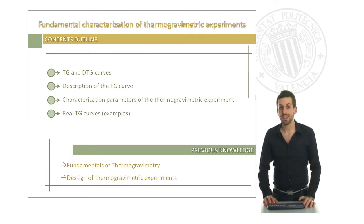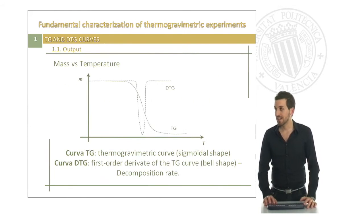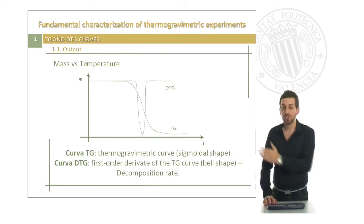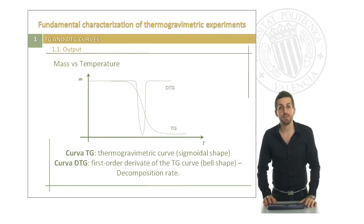Let's start then with the TG and DTG curves. This is the output of our thermogravimetric analysis in which we obtain a plot that represents the mass versus the temperature. The sigmoidal shaped curve that we can see is the TG thermogravimetric curve and the other one which has a bell shape is the first order derivative curve in which we analyze the decomposition rate.